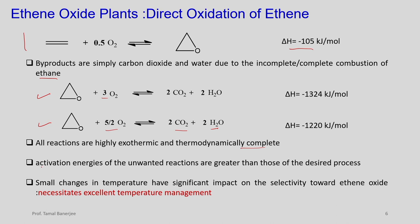The activation energies of the unwanted combustion reactions are greater than those of the desired ethylene oxide formation. However, as temperature rises due to the exothermic ΔH of –105 kJ, the second and third reactions (combustion to CO₂ and water) become possible. Small changes in temperature have a significant impact on selectivity. Therefore, the selectivity toward ethylene oxide depends entirely on how well temperature is controlled — necessitating excellent temperature management.